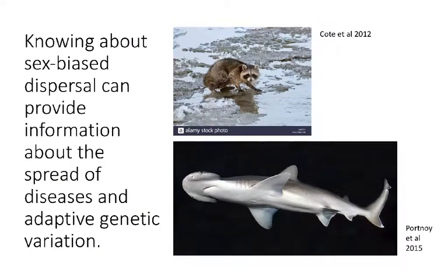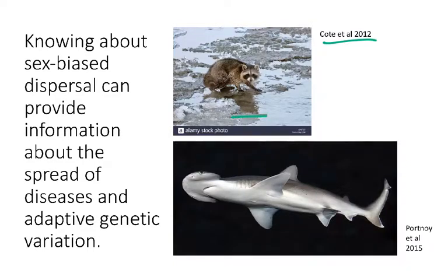It's important to know about sex-biased dispersal because it has important implications for evolution, and it gives us information about the spread of diseases and adaptive genetic variation, which is important for conservation. In this first example with raccoons, males are more likely to cross frozen rivers, which means males are more likely to spread the raccoon variant of rabies — it's specifically the males doing that spreading.